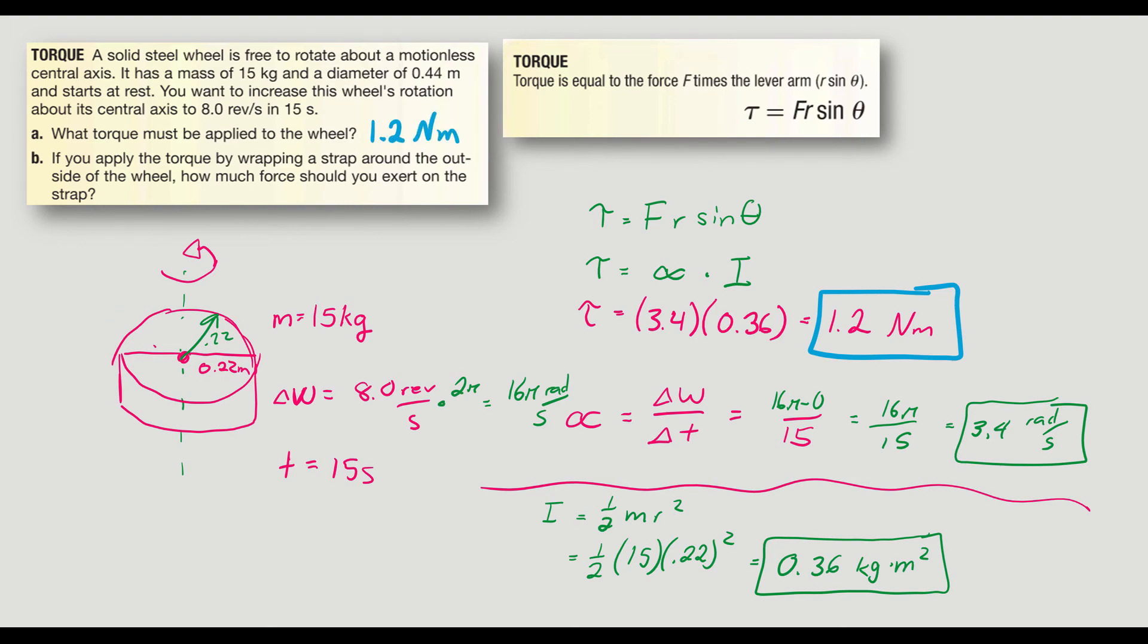And then they say, if you apply the torque by wrapping a strap around the outside of the wheel, how much force do you exert on the strap? So this is this idea, someone takes a strap, wraps it around, and then they're going to pull right here, and that's going to cause the wheel to spin. It's kind of, if you've ever had a lawnmower that you pulled to start it, or a weed whacker, or any engine that you have to pull that string to start it, it works this way.